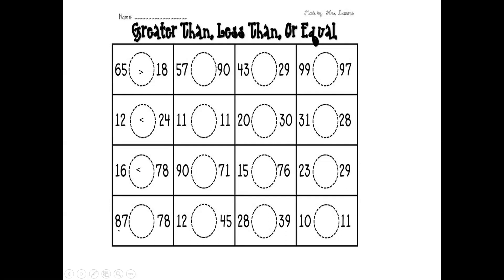87 and 78. Starting with 8, and this is starting with 7. Obviously, 8 is bigger. So, 87 is greater than 78 — open mouth to 87, this side is greater than, this side is less than. Now, 57 and 90. Starting with 5 and starting with 9. 90 is greater. So, 57 less than 90. You have 11 sweets and I have 11 sweets, so it is equal.